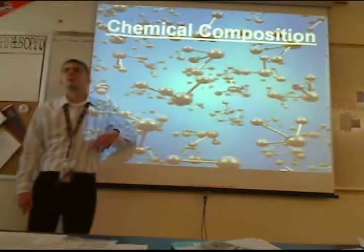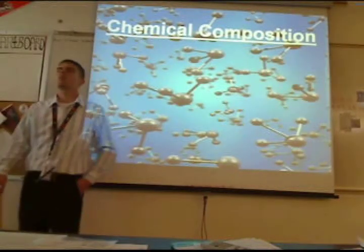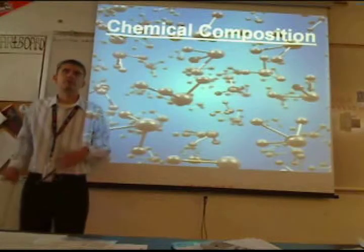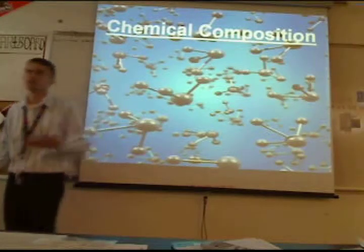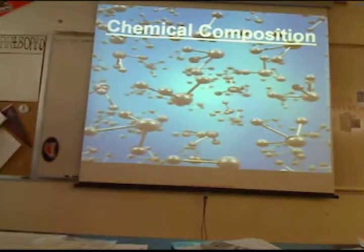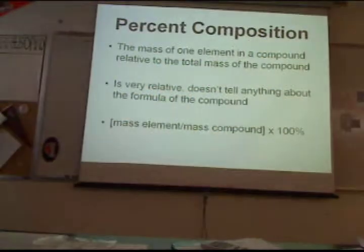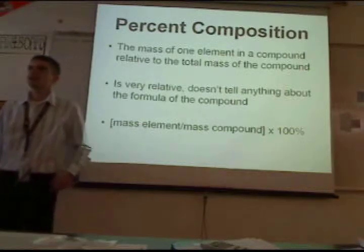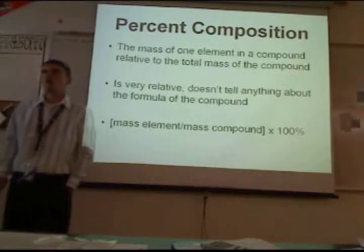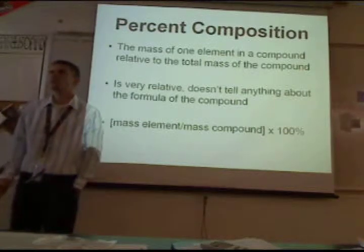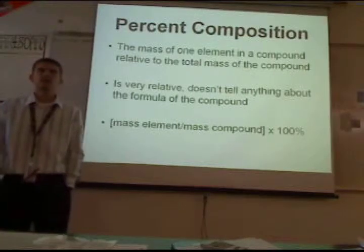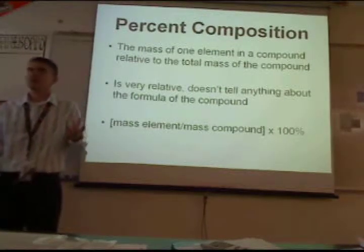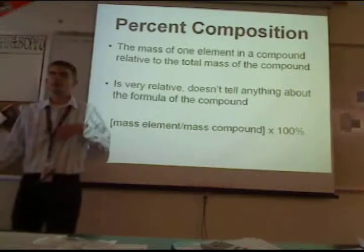Chemical composition is basically what makes up a compound and in what amounts. The first type we talk about is percent composition. Percent composition is basically what percentage of the mass of the entire compound does the mass of one element make up.